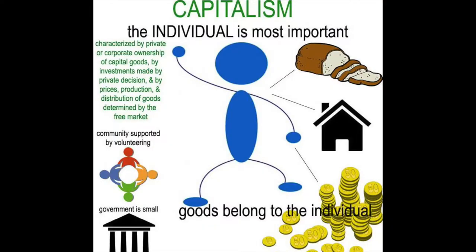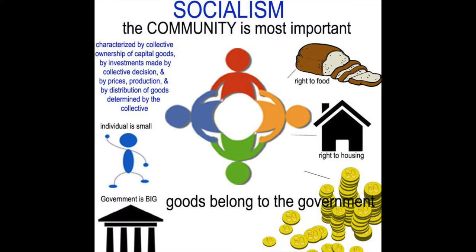Capitalism is generally described as a system where the individual is most important, characterized by private or corporate ownership of capital goods, by investments made by private decisions, and by prices, production, and distribution of goods determined by the free market. The community is generally supported by volunteering, and the government is assumed to be very small, while all goods belong to individuals. Socialism lies in between communism and the free market. In socialism, the community is considered most important, characterized by collective ownership of capital goods, investments made by collective decision, and prices, production, and distribution determined by the collective. The individual is much smaller, the government is very big, and goods belong to the government.